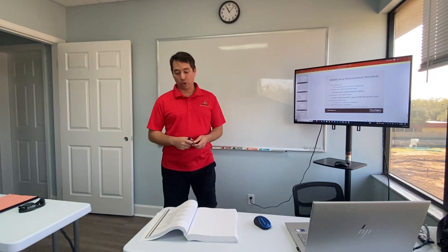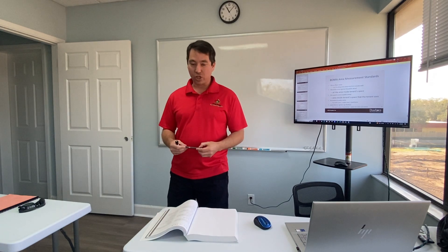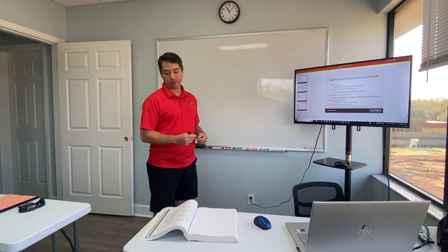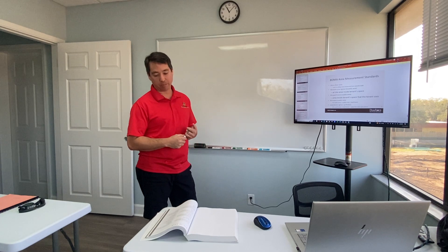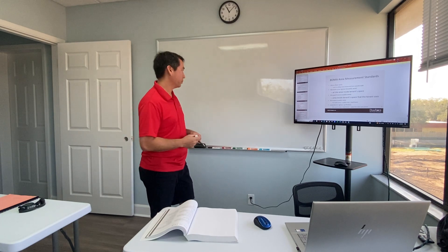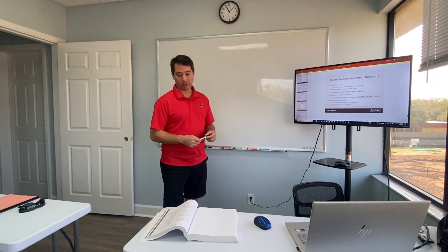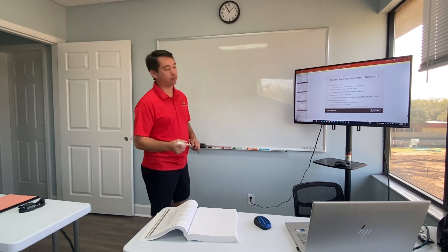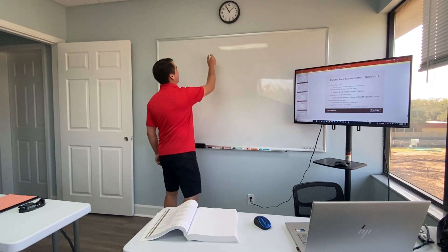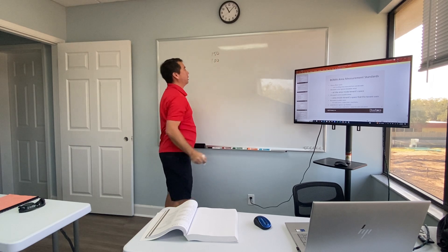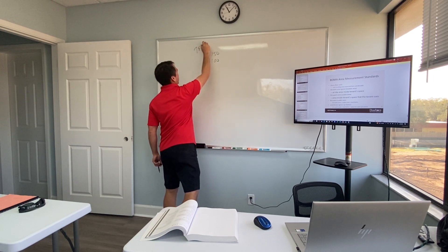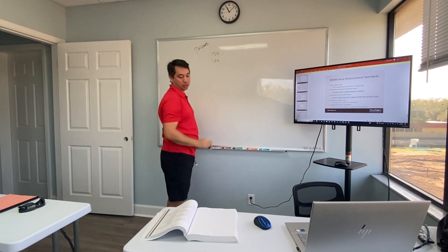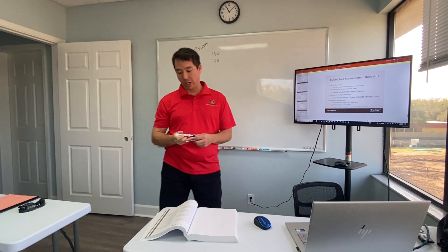We're going to talk about gross floor area. Question number five: a building has seven stories measuring 100 feet by 150 feet on each floor. Seven stories, 150 feet by 100 feet on each floor. So I'm going to go 150, 100, and we have seven floors. That's the first part of the statement.